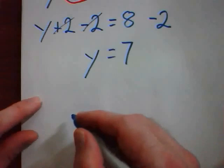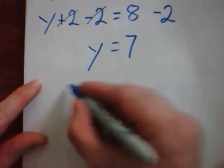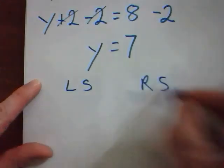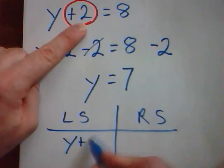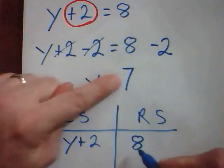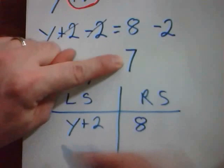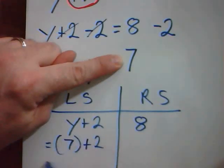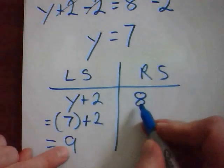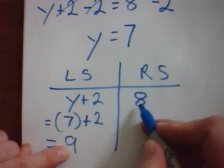So let me continue to see if I did my work correctly. I'm going to do left side, right side. I'm going to go back to my original equation and put this on the left and this on the right. I'm going to take what I think the answer is, and put it in where y is. And then I'm going to add it. 7 plus 2 equals 9. Wait a minute. My equation doesn't balance. There's something wrong. I made a mistake. Now, I have to go back and redo my question to find out what's wrong.